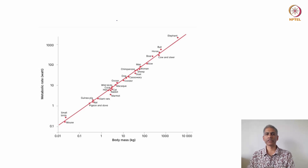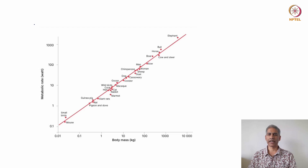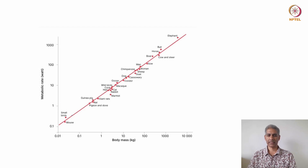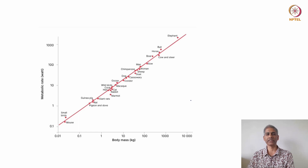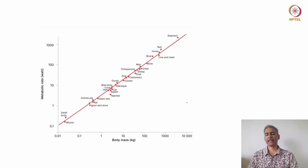Here's another relationship shown in allometry, also called Kleiber's law. We are comparing body mass of different animals to their metabolic rate — essentially their energy requirement. Amazingly, across six orders of magnitude — from about 0.01 kilograms to over 10,000 kilograms — the same relationship seems to hold for body mass and its relationship to metabolic rate or energy requirement. This seems to suggest there could be universal rules governing mass and metabolism.